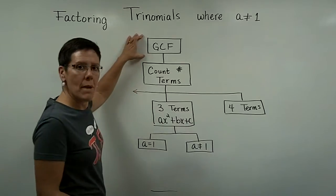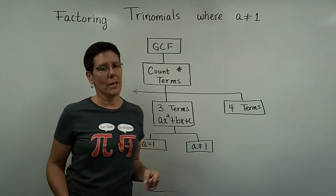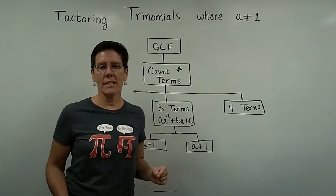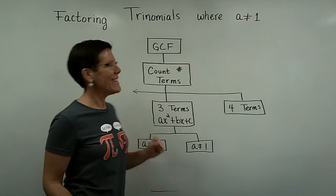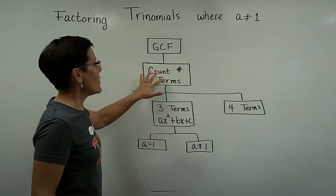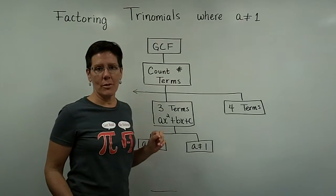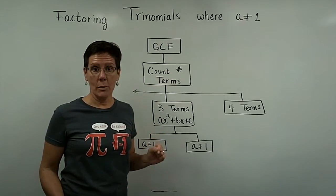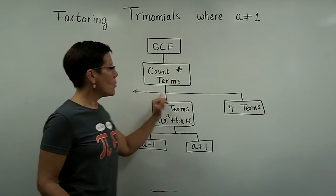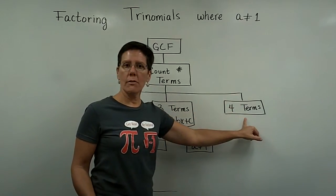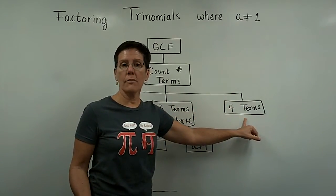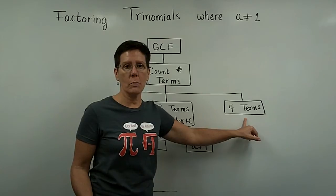I'd like to remind you that my broken record is going on and that you always need to take the greatest common factor out first in any polynomial. And then would you count the number of terms in that polynomial that you'd like to factor? And we've already completed a couple of video clips on if there were four terms and you factored by grouping.